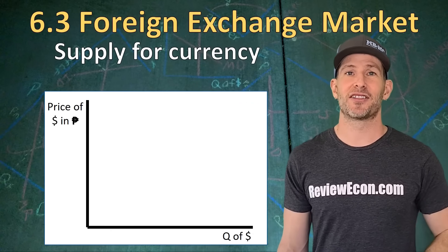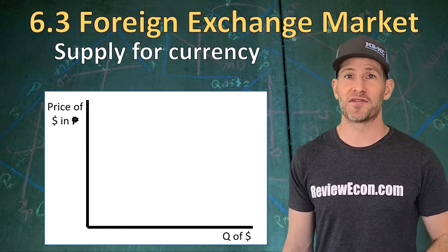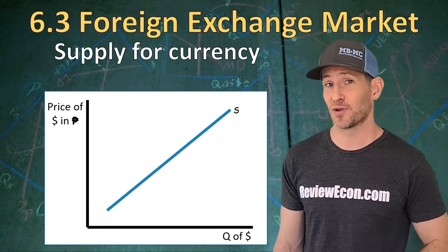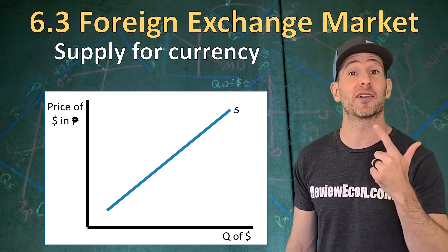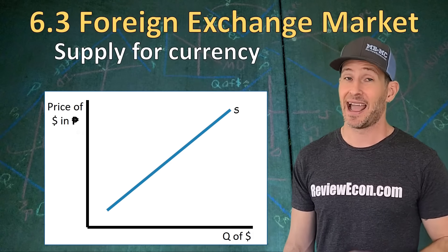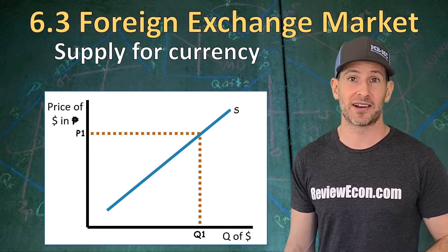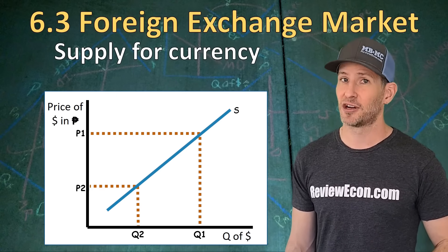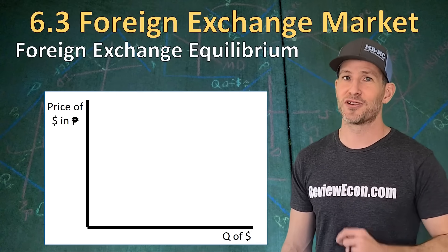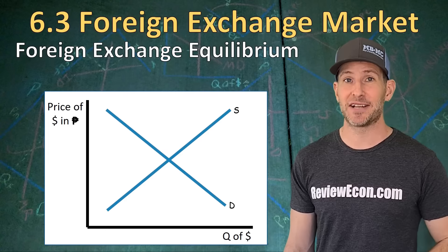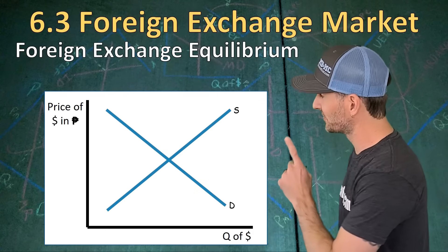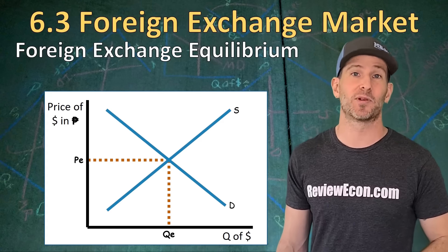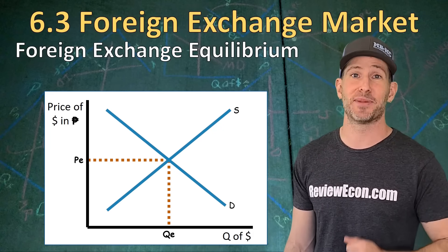The supply curve, on the other hand, is going to look like the supply curves you've already seen. We're going to have an upward sloping supply curve that shows the direct relationship between the exchange rate and the quantity of dollars that will be supplied. At high exchange rates, we're going to have a high quantity of dollars supplied, and at low exchange rates, we will have a low quantity of dollars supplied. Put those two graphs together and we get our equilibrium exchange rate. Where the two curves intersect, that gives us our equilibrium exchange rate and the equilibrium quantity of dollars supplied and demanded.